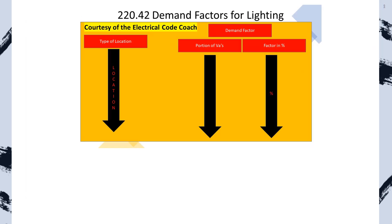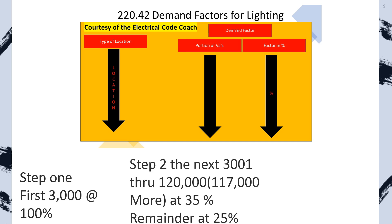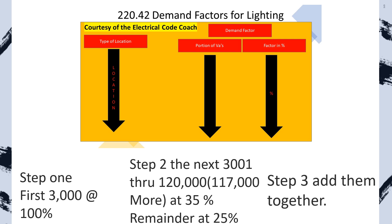When looking at this table, we're going to see a multi-layered demand factor for dwelling units. Step one, we're going to take the first 3,000 VAs at 100%. Step two, we're going to take in between 3,001 through 120,000 — which is technically just another 117,000 more — at 35%. And then we're going to take anything above and beyond that at 25%. Then step three, we add them back together: we take the original 3,000 that we set to the side, then we take that new reduced load, add those two together, and that gives us our total load.